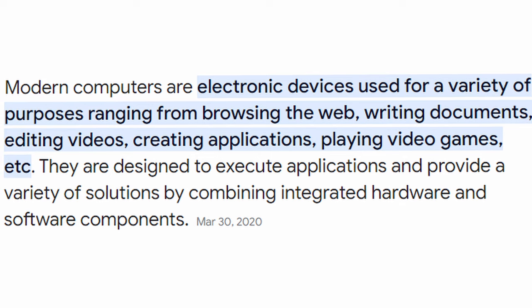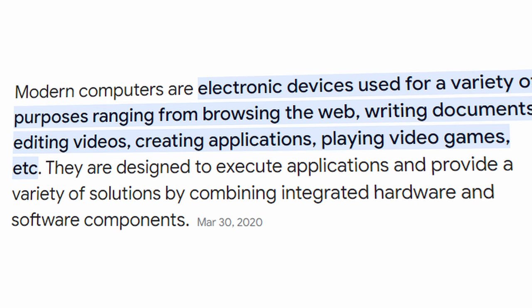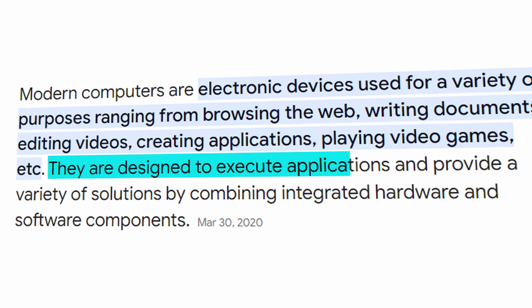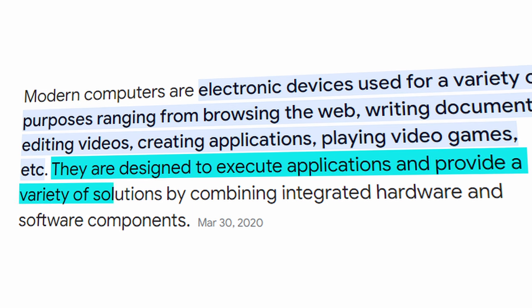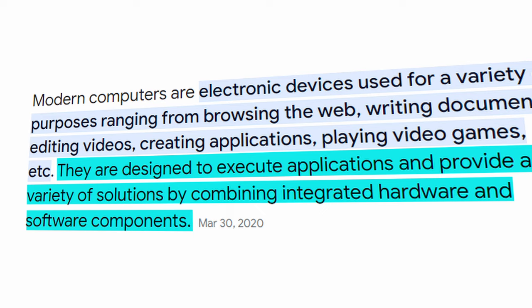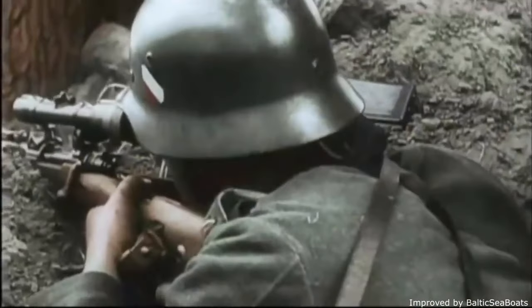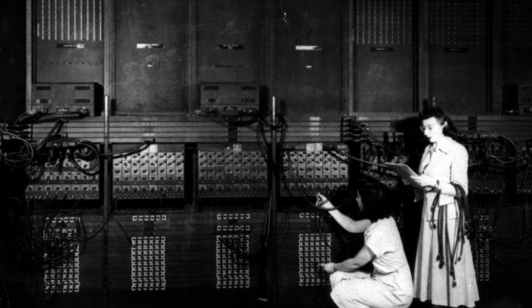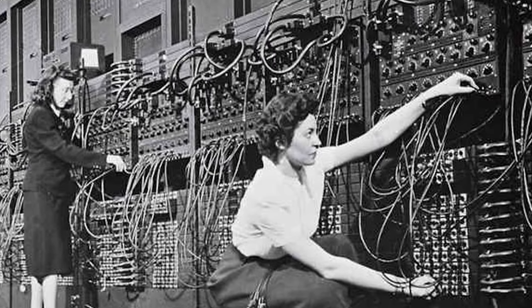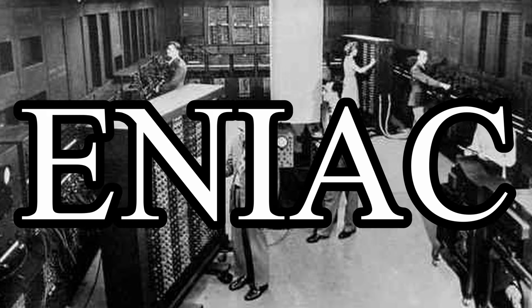Modern computers are defined as electronic devices used for a variety of purposes. They are designed to execute applications and provide a variety of solutions by combining integrated hardware and software components. By this definition, we're going to start by the end of World War II. Two months after the war, the first programmable electronic general-purpose computer was put into general use. It was named the ENIAC.